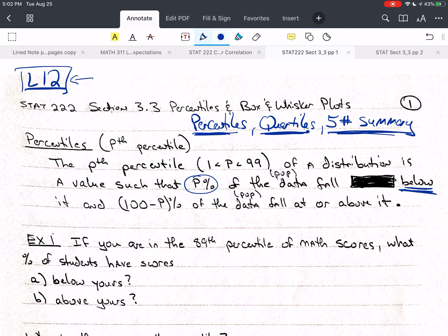Let's do a quick example. If you are in the 89th percentile of math scores, what percentage of students have scores below yours? Well, that's 89%. How about above yours?